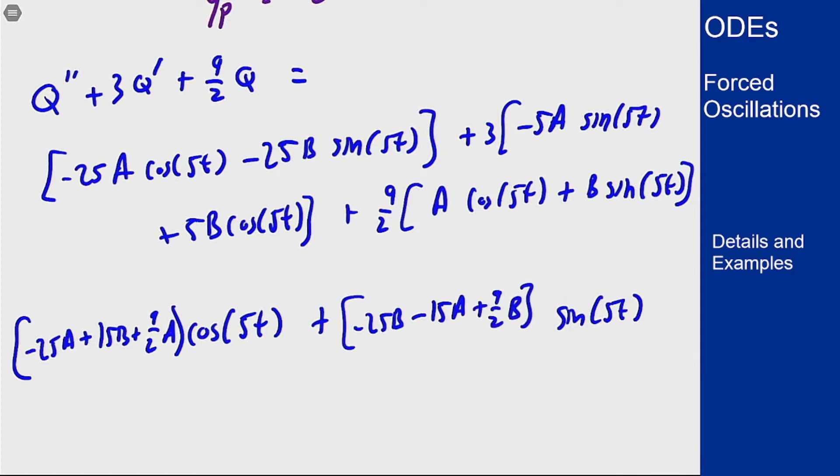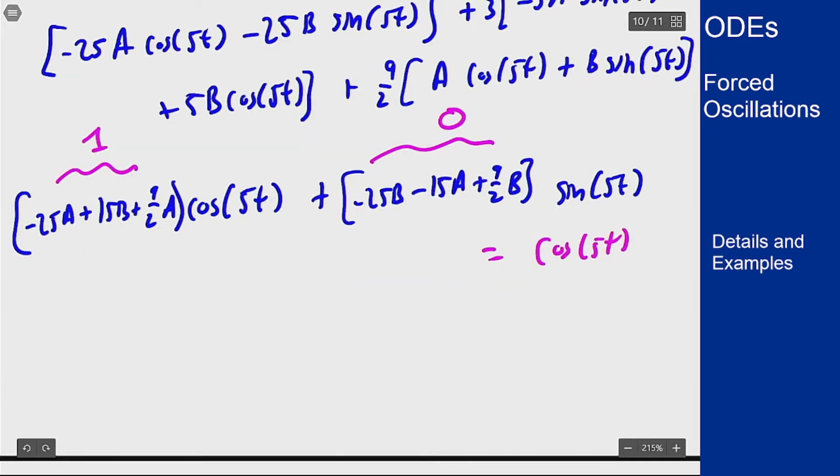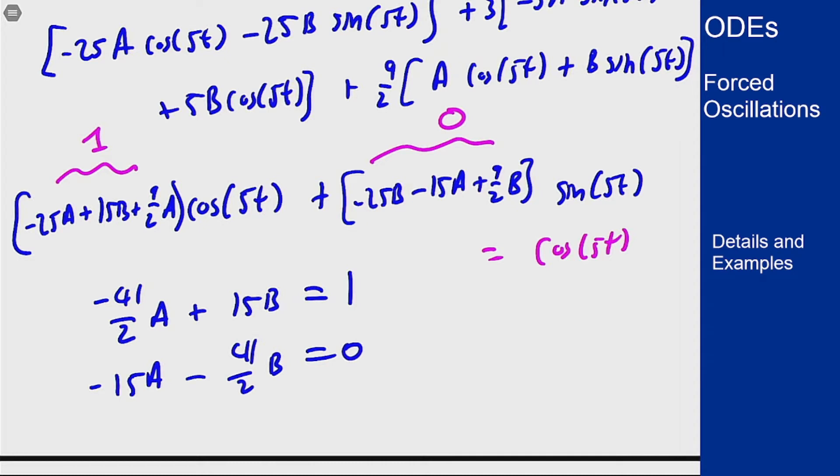I want this to match cosine of 5t, so I want this to be 1 and this to be 0. This means I get the system of equations: negative 41/2 A plus 15B equals 1 and negative 15A minus 41/2 B equals 0. We can start by multiplying both equations by 2 to make it look nicer.